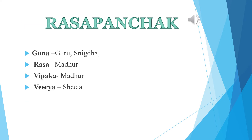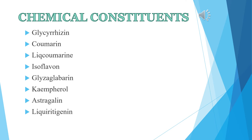The Rasa Panchaka of Yashti Madhu: Rasa is Madhura. Guna is Guru and Snigdha. Vipaka is Madhura. And Virya is Sheeta. Chemical constituents present in Yashti Madhu include Glycyrrhizin, Coumarin, Liquicoumarin, Isoflavone, Glyzoglabrin, Campherol, Astragalin, and Liquiritigenin.